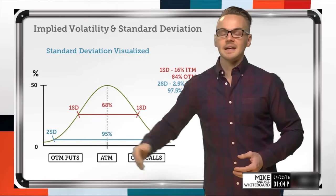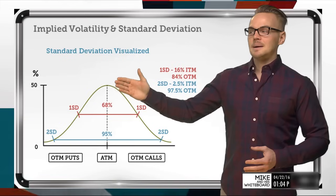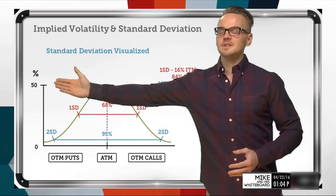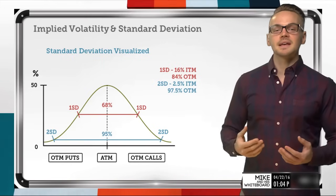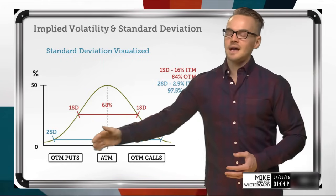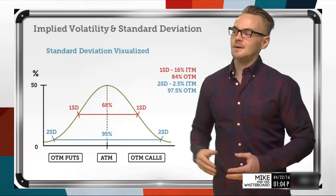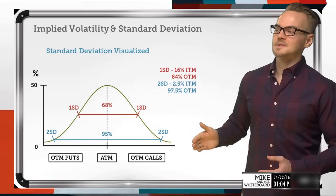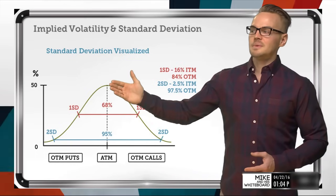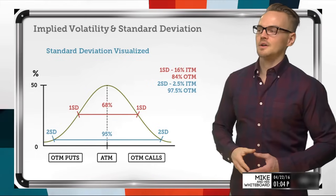When we go to the at-the-money options, we're going to have the highest percentage — around 50% of that option being in the money. Looking at out-of-the-money puts on the downside and out-of-the-money calls on the upside, we're going to reach our peak probability of being in the money of 50% right at the top of the bell curve.